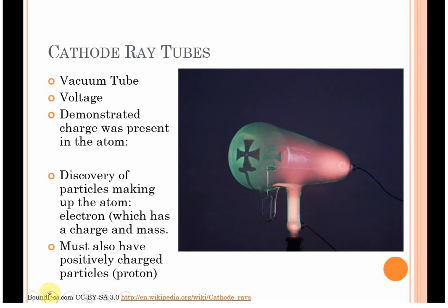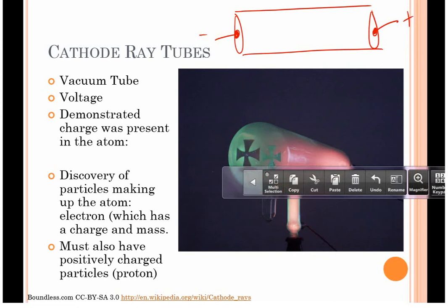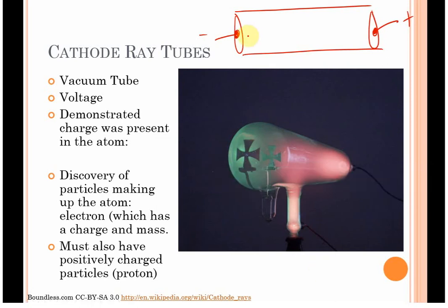The way the cathode ray experiment worked is you have this vacuum tube, or a tube that's got a vacuum pulled on it. You have two ends that are connected to a battery, one is positive, one is negative. Then, you can shoot electricity through this tube, and it went from negative to positive.